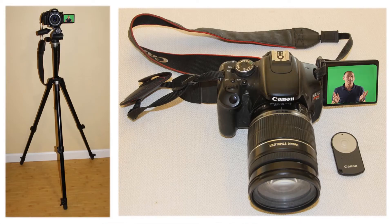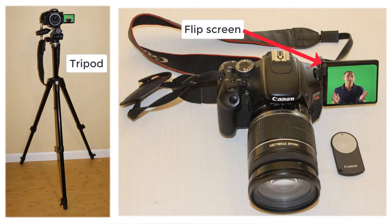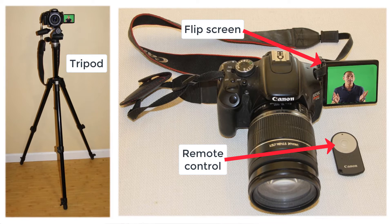Now if you're going to film yourself, a tripod will be critical. And having a camera with a flip screen like this can also really help to get you positioned right in the camera. I also like having a remote controller for the camera — that way I can start and stop the video and make sure that I'm in focus.